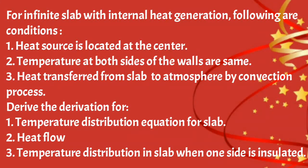For an infinite slab with internal heat generation, the following conditions apply: first, the heat source is located at the center; second, temperature at both sides of the slab wall are the same; third, heat is transferred from the slab walls to the atmosphere by convection. We need to derive: first, the temperature distribution in the slab; second, the heat flow; third, the temperature distribution when one side is insulated.